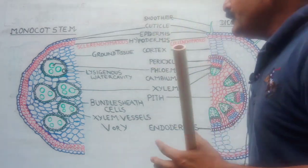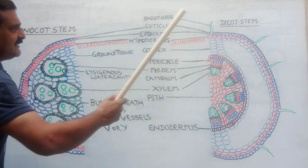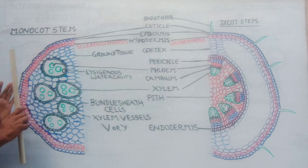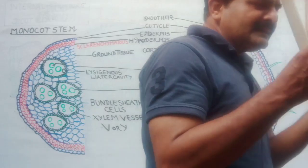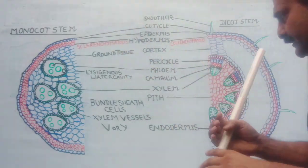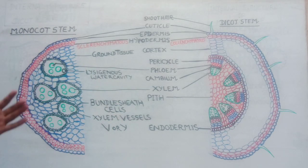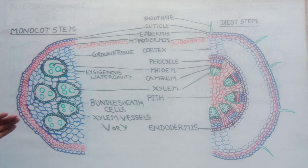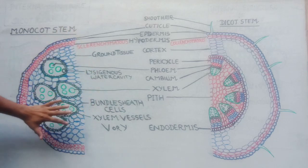Just below the hypodermis there is a region called cortex in case of dicot. But in case of monocot, the cells present below the hypodermis are called ground tissue. This is because in monocot stem the cells are not differentiated into distinct regions — cortex, endodermis, pericycle, and medullary rays are all absent in monocot.